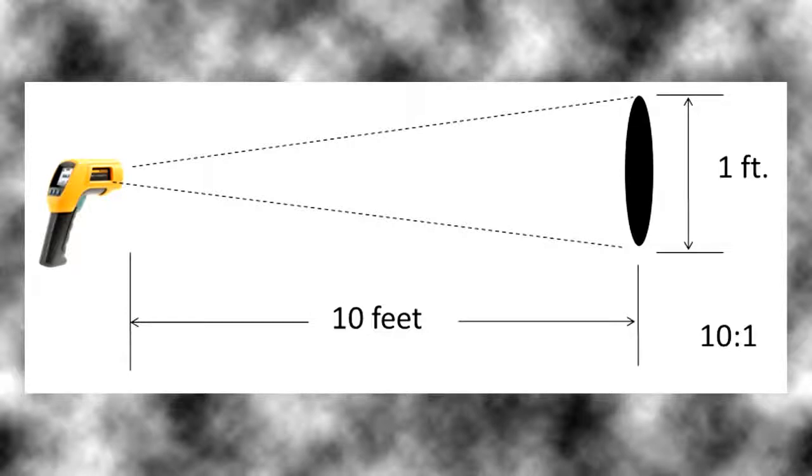For example, if we had a device with a 10 to 1 distance to spot size ratio and we were 10 feet from the target, we would take that 10 feet divided by the 10 to 1 ratio and that would give us a 1 foot diameter circle.